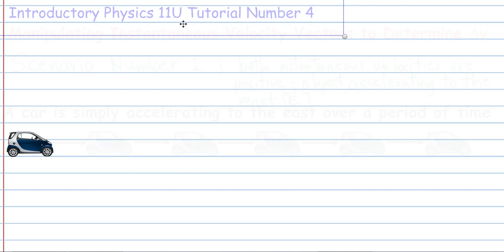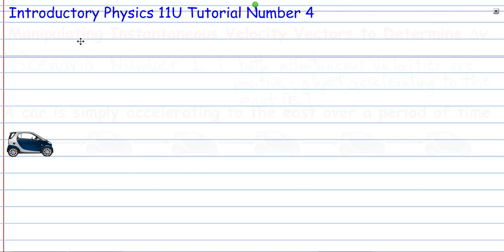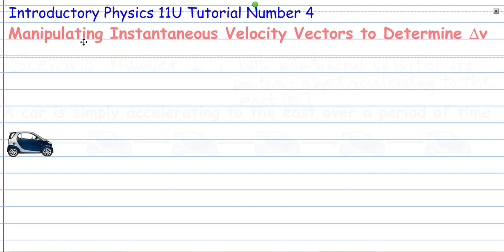Welcome to Introductory Physics video tutorial number 4 for grade 11, Rude Physics. This is an Introductory Physics course. This particular tutorial is about manipulating instantaneous velocity vectors to determine delta V and to ultimately determine the acceleration once you're given a delta t.